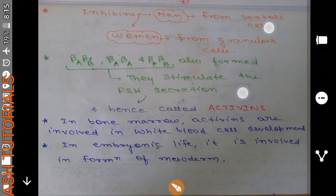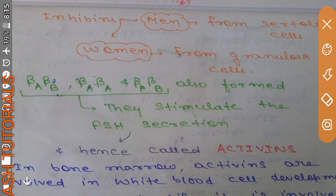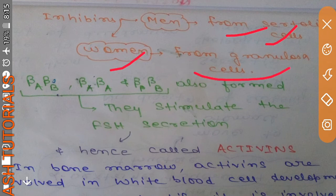Now, inhibin in males is secreted from Sertoli cells, as we have discussed in our previous videos, and in females it is coming from granulosa cells. Now as we discussed, alpha combines with beta A or beta B, but there are also chances that beta A combines with beta B, or beta A with beta A, or beta B with beta B.